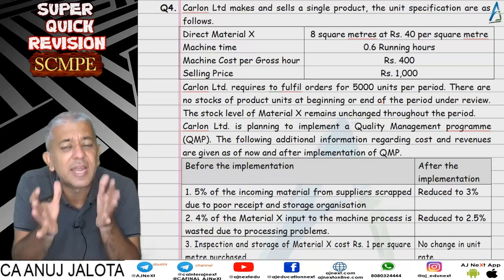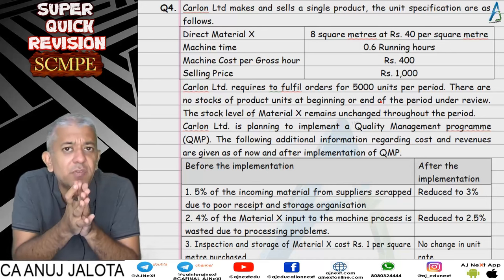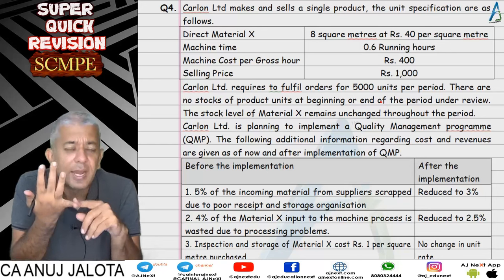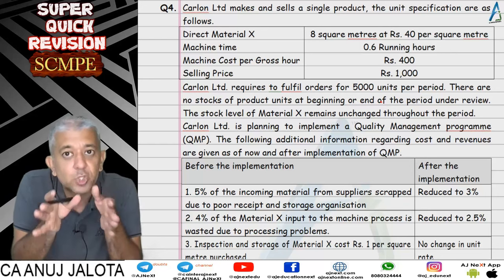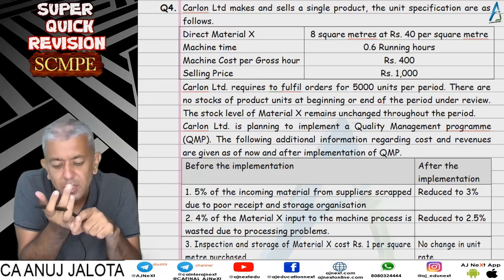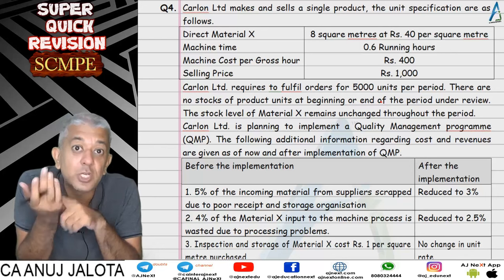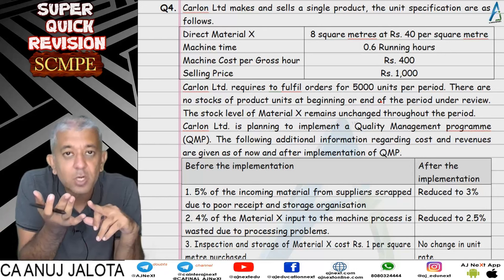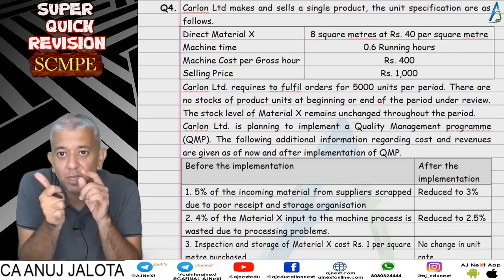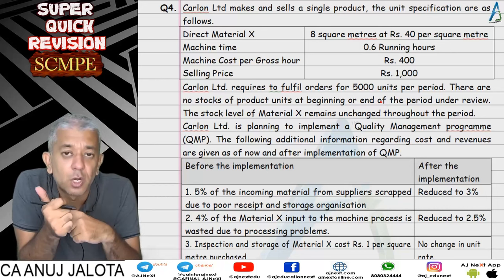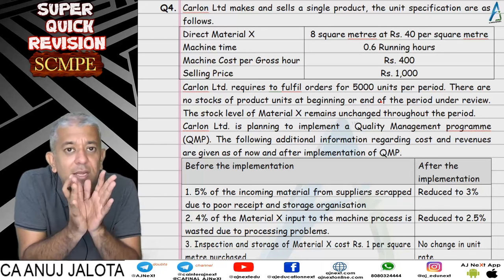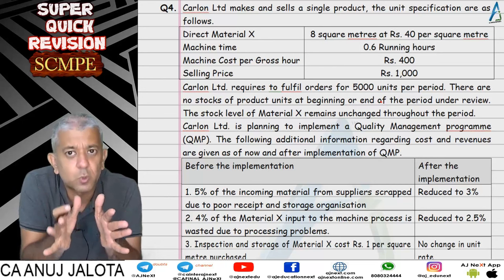Question 4 was a different kind of question. A company decided to follow Total Quality Management and started getting benefits. Two things were required: first, find out how many units to produce — we must sell 5,000 units but need to produce more due to replacements and defects. Second, purchase more raw material than required because of storage and processing losses. Third, machines require more gross time due to idle time.